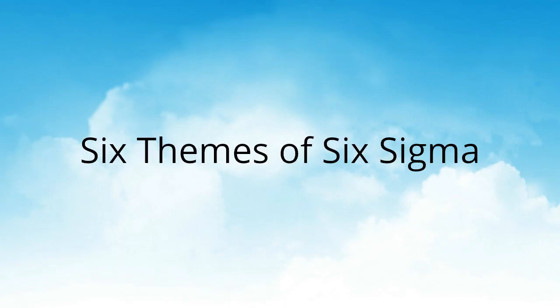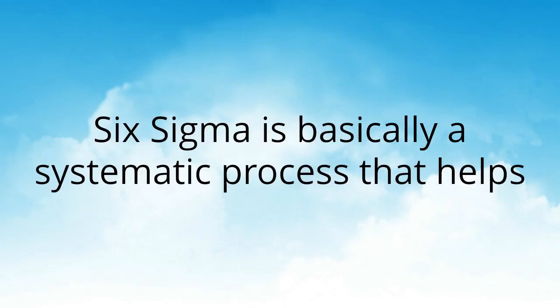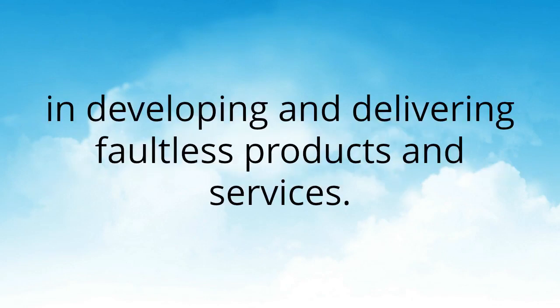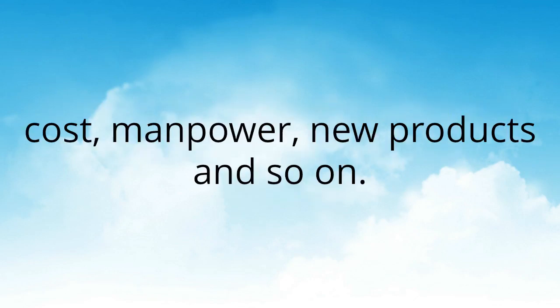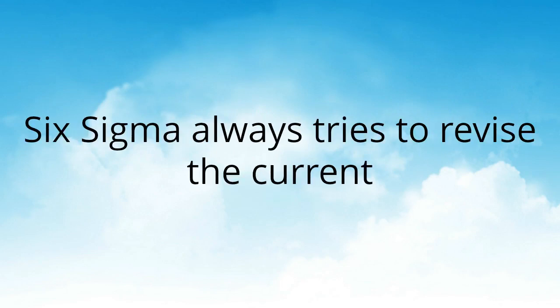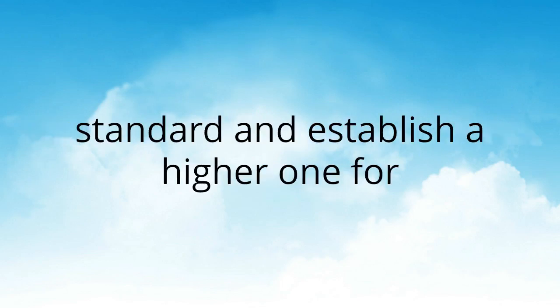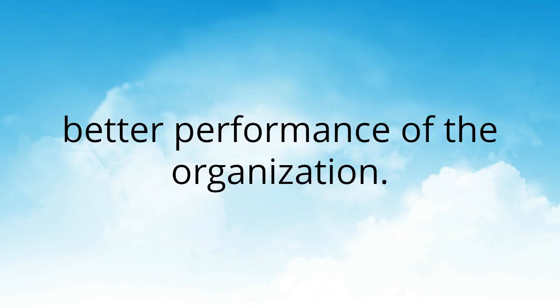Six Sigma is basically a systematic process that helps in developing and delivering faultless products and services. It aims to meet and improve organizational goals on quality, cost, manpower, new products, and so on. Six Sigma always tries to revise the current standard and establish a higher role for better performance of the organization.